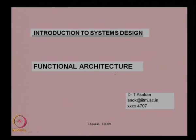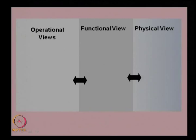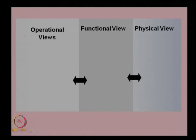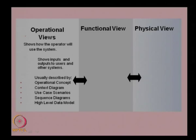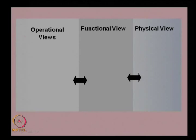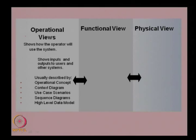If you look at the system architecture, you can see that there are three different views for a system. The first one is the operational view, the other one is the functional view, and the physical view. Any engineering system can be looked at from these three different perspectives. In the operational view, we try to see how the system will be used by an operator or a consumer, and it is described by the operational concepts, context diagram, use case scenarios, sequence diagrams, and data modelling.